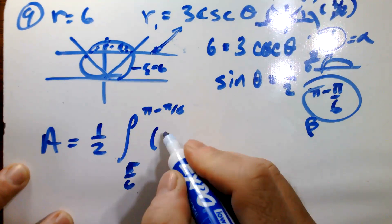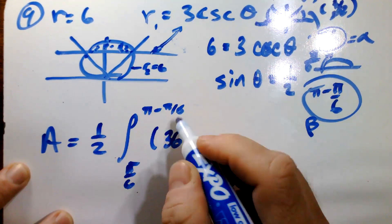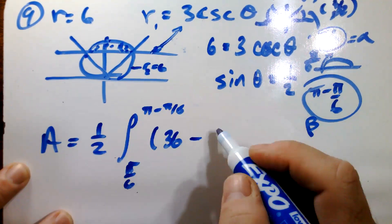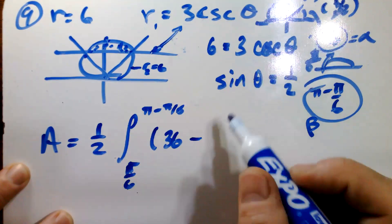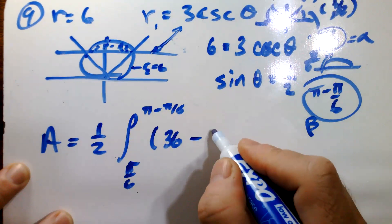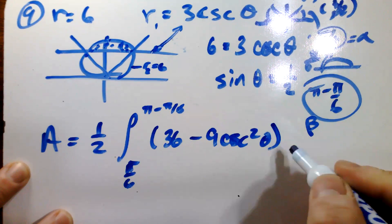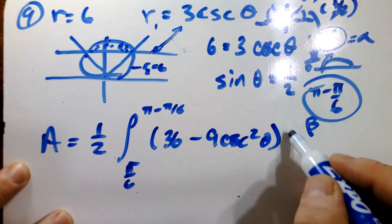So we're going to have r2 squared, 36, which is six squared, minus the r1 squared, which is going to give me nine cosecant squared theta d theta.